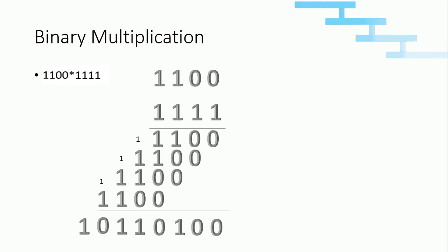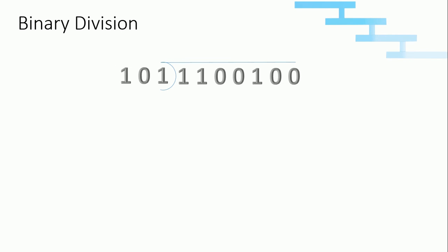Now we will see about binary division. We will see binary division with an example: divide one one zero zero one zero zero by one zero one. Since the divisor is a three-digit number, we take the first three digits of the dividend, that is one one zero. We check whether one one zero is bigger than or equivalent to one zero one. Obviously one one zero is bigger than one zero one, so we put one in the quotient and place one zero one. One one zero minus one zero one gives us one. Now take the next value which is zero; we get one zero, which is lesser than the divisor, so we place a zero in the quotient.